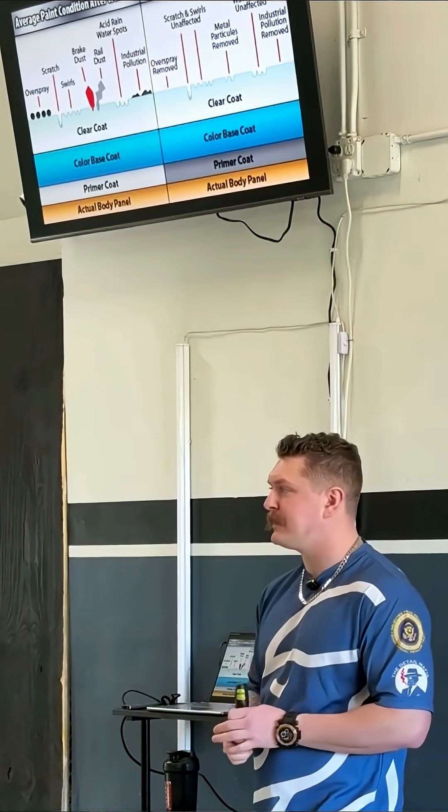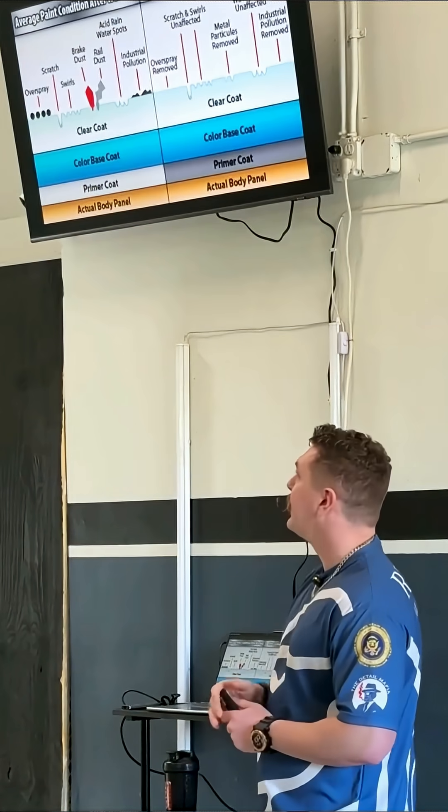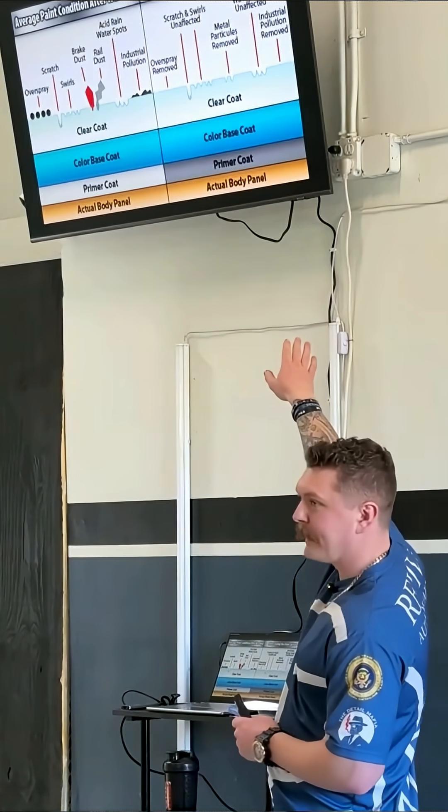We've talked a lot about different types of paint systems. Newer model cars are base coat, clear coat, where you have the body panel at the very bottom.